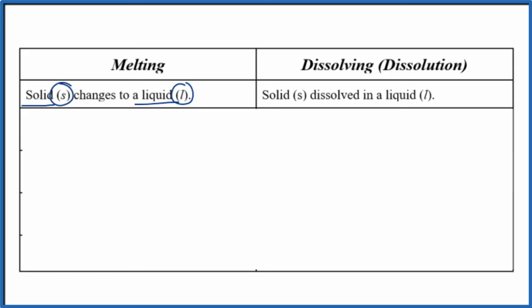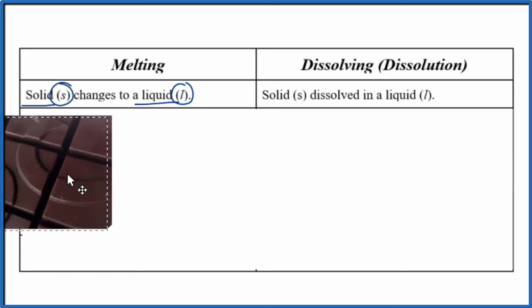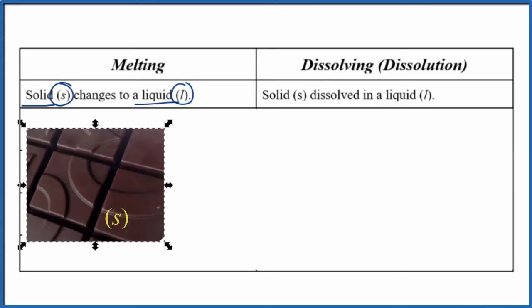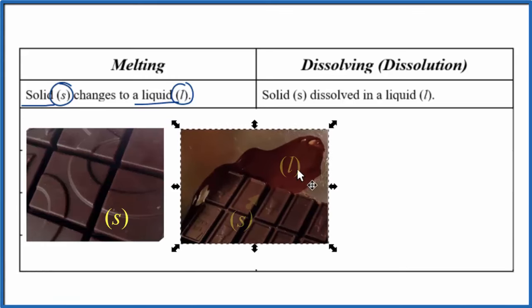So a good example of melting would be chocolate. We take a block of solid chocolate here, we heat it up and we end up with this liquid chocolate here. So we have a solid changing to a liquid. Here's the important thing though - it's still chocolate. This is chocolate and this is chocolate. It's the same substance. We only have one substance involved.